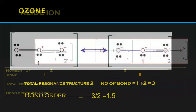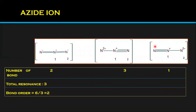Azide ion (N₃⁻) has three resonance structures. The first structure has 2 bonds, the second has 3 bonds — wait, the third has 1 bond. Fixing the position and summing: the total number of bonds is 6 across all resonance structures, with 3 resonance structures. So bond order = 6 divided by 3 = 2. The azide ion has a bond order of 2. This is an easy way to calculate bond order for resonance structures.